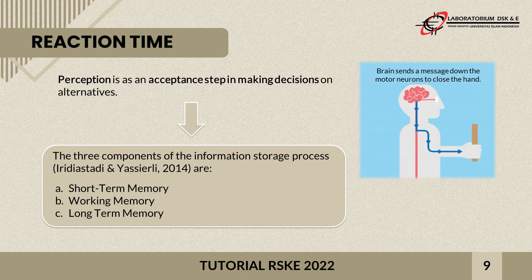Next is the perception process — the process by which the brain processes the information received from a stimulus. Perception is an acceptance step in making decisions about existing alternatives. A person's perception is influenced by memory, and there are three memory components: short-term memory, working memory, and long-term memory.